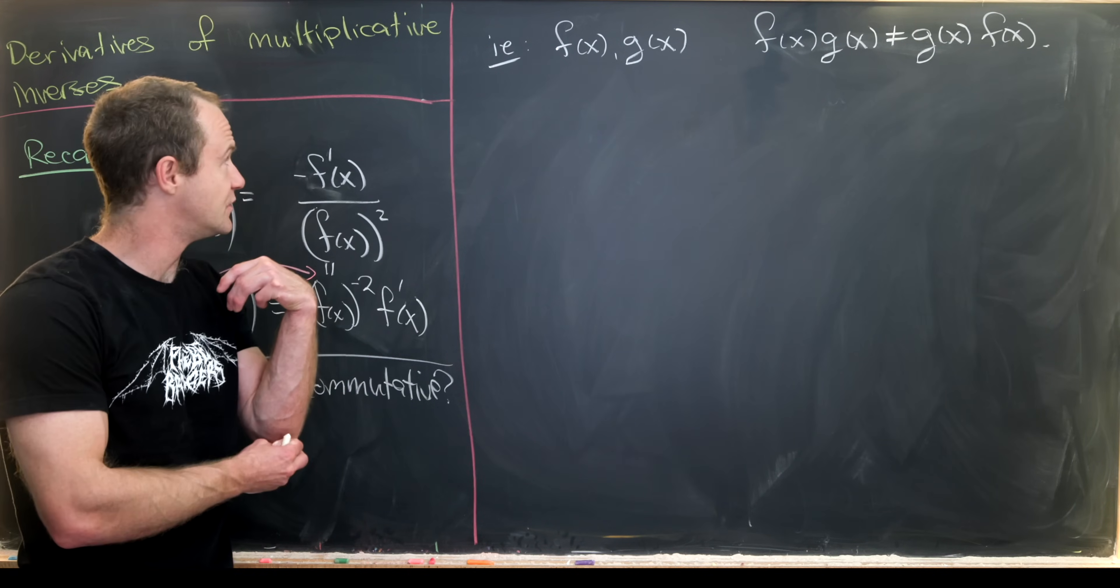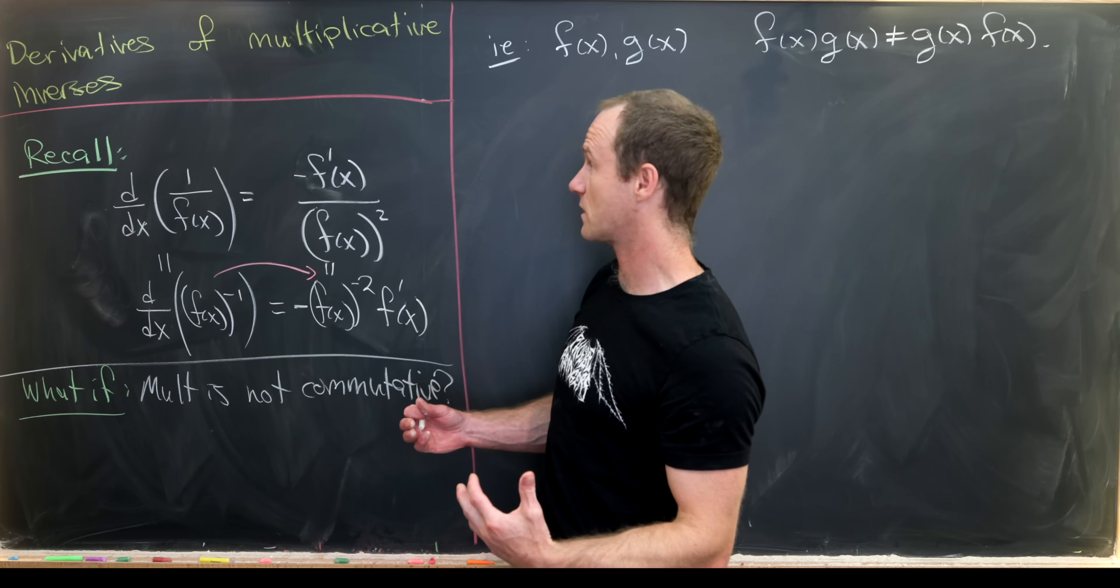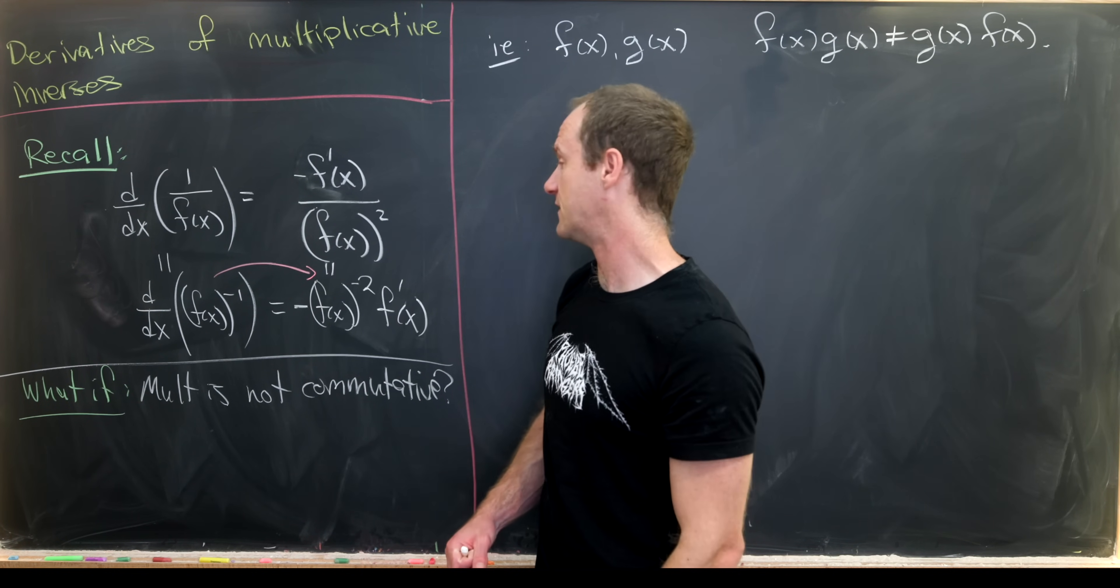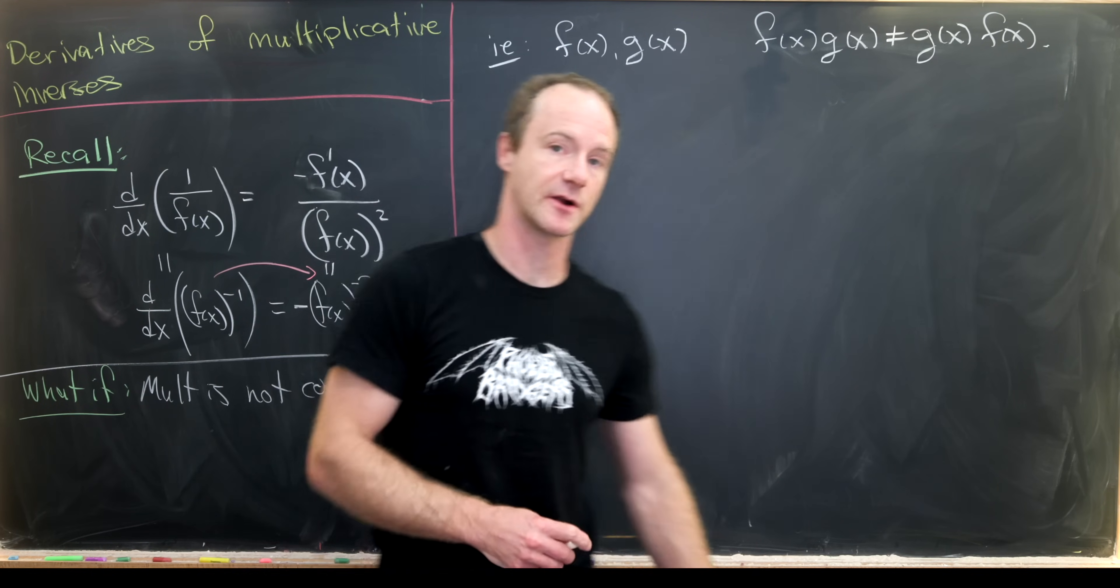Let's forget that we have commutativity, and then derive a general formula for the derivative of the multiplicative inverse of a function, just like this general formula that we have right here.